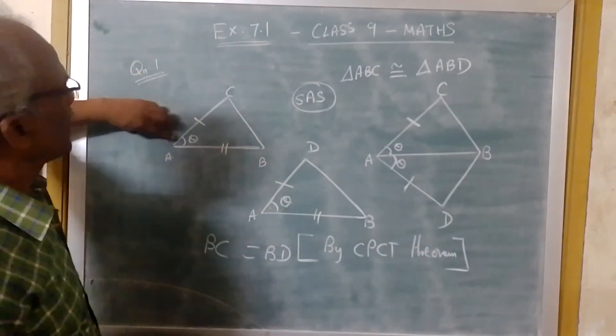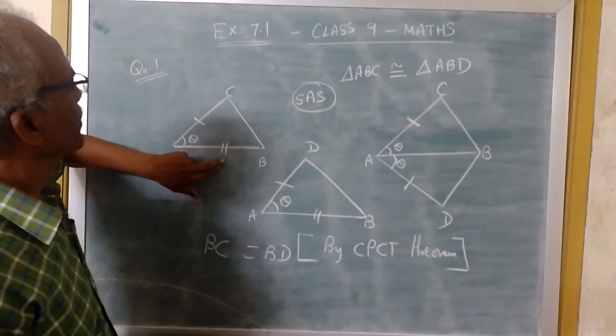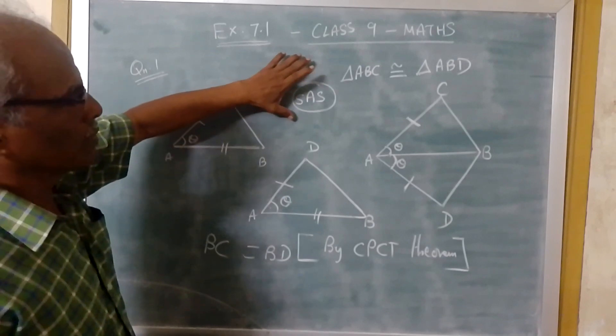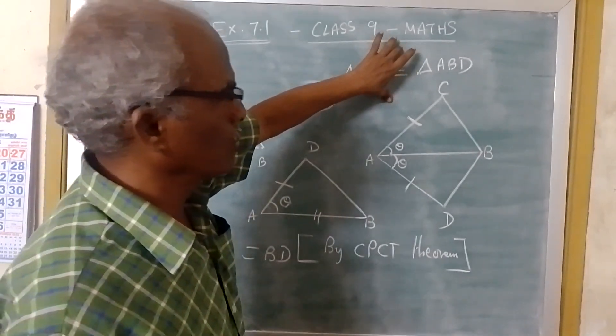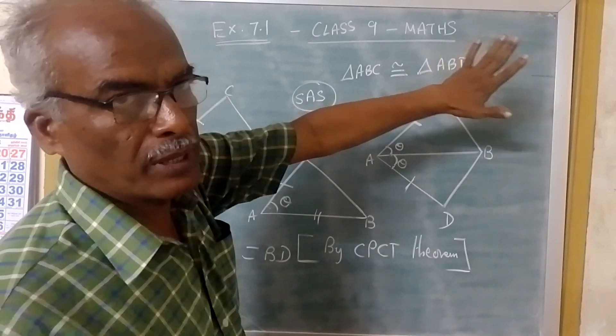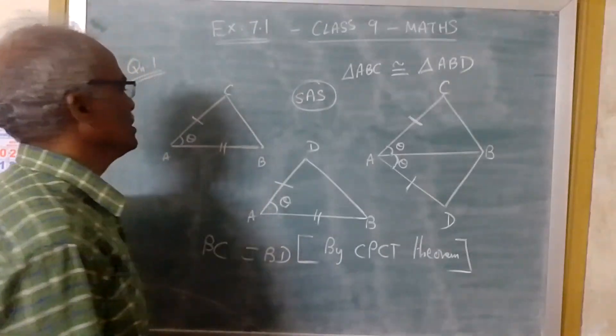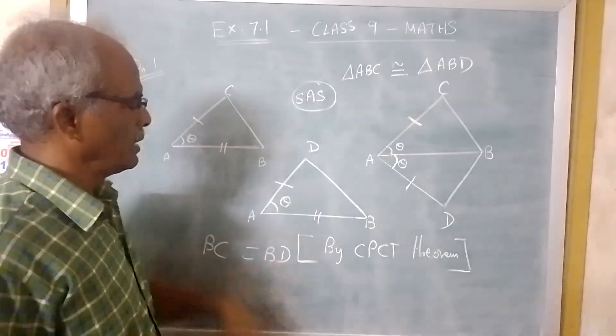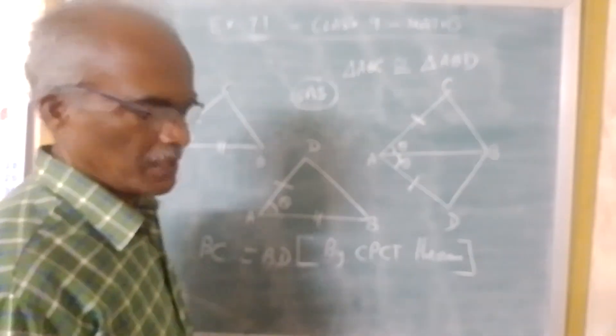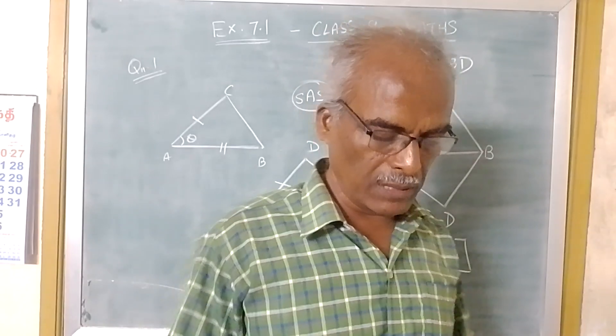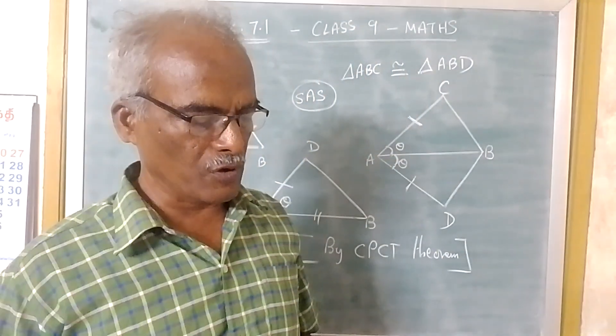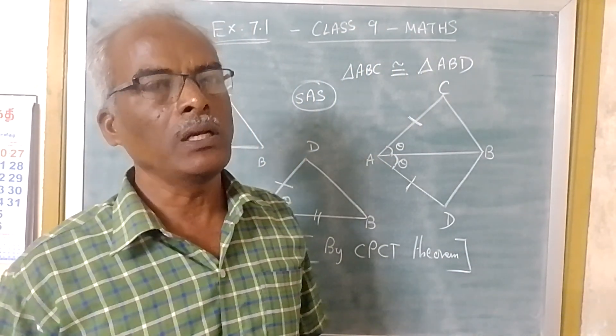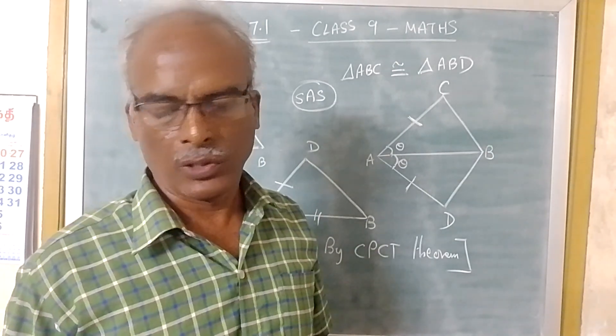Since side, angle, side, we have proved that triangle ABC is congruent to triangle ABD. Both the triangles are congruent. So if that is the case, then we can say BC is equal to BD by CPCT theorem. CPCT means corresponding parts of congruent triangles should be congruent. Thank you.